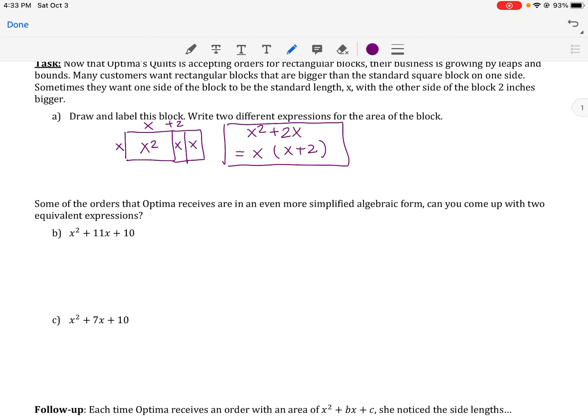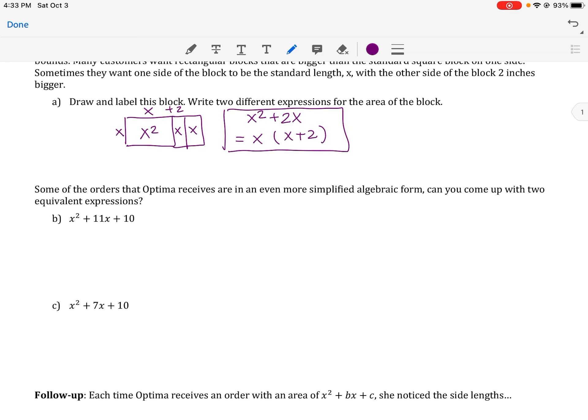Some of the orders that Optima receives are in even more simplified algebraic form. Can you come up with two equivalent expressions? This one's a little bit different. Maybe you want to just draw a generic rectangle. We're going to have x squared here, and we know that we have to break it into the x on this part and the x on this side. But we do know the total is ten. So how can I get to the 11x by breaking into two separate parts? Then when you multiply them together, you get ten.